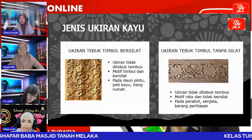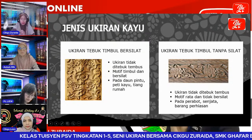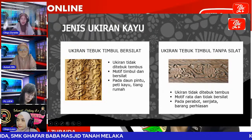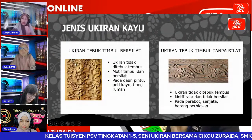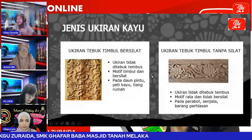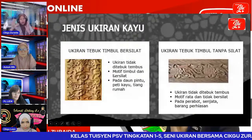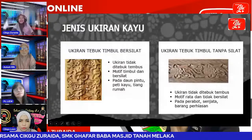Seterusnya yang perlu difahami betul-betul: ukiran tebuk timbul bersilat dan ukiran tebuk timbul tanpa silat. Persamaan dua-dua ukiran ini: dua-dua ditebuk. Kalau ini bunga, latar belakang bunga itu ditebuk, didalamkan, dibuang. Tapi tidak tembus — tidak nampak berlubang sampai belakang. Motif untuk yang bersilat, dia timbul. Kita boleh rasa daun dia, bentuk dia bagaimana, bunga tu kelompaknya arah mana. Manakala untuk ukiran tebuk timbul tanpa silat, ukiran motif dia rata.